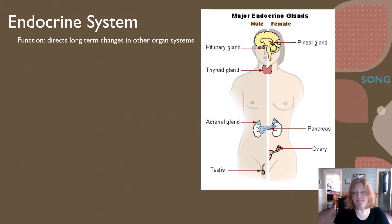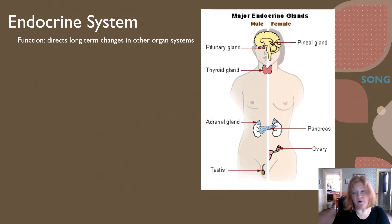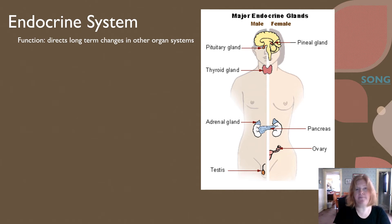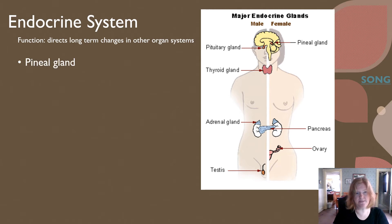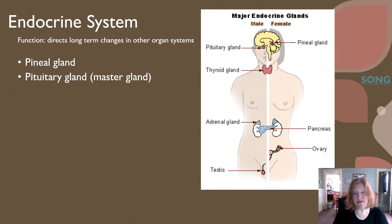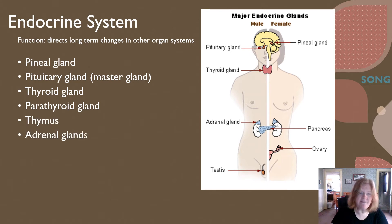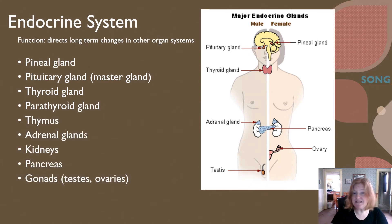Moving on to the endocrine system. Where the nervous system is fast, the endocrine system is slow, and it relies on chemical messengers. These chemical messengers are released from glands, go into the bloodstream, and then move to their target cells. The endocrine system directs long-term changes in other organ systems. It includes the pineal gland, the pituitary gland (the master gland), the thyroid gland, the parathyroid gland, thymus, adrenal glands, kidneys, pancreas, and gonads — which are your testes and ovaries.